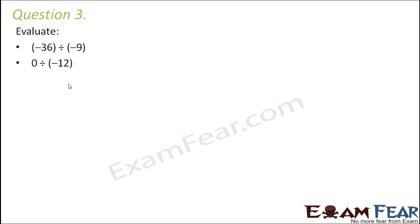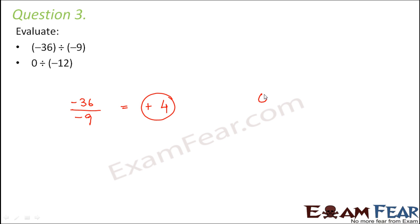Question number 3: Evaluate minus 36 divided by minus 9. Two negative numbers give a positive result, and the result is 4 because 9 times 4 is 36. So the answer is plus 4. The second part: 0 divided by minus 12. Now 0 divided by anything is equal to 0, so 0 is the answer.